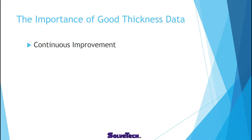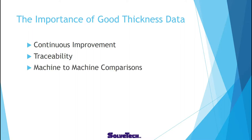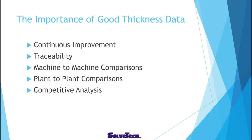If we have good thickness data, we can do continuous improvement of the uniformity of our materials. We can have traceability of our quality. We can do machine-to-machine comparisons, meaning we can look at how one piece of equipment is performing next to another. We can do plant-to-plant comparisons and competitive analysis, and of course we can do a great job with quality assurance, getting good accurate data in a short period of time.